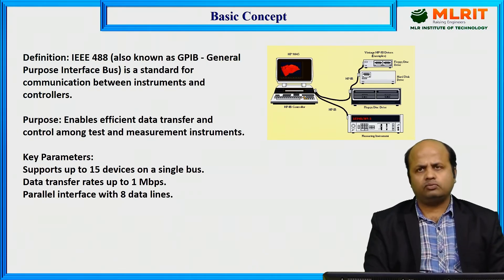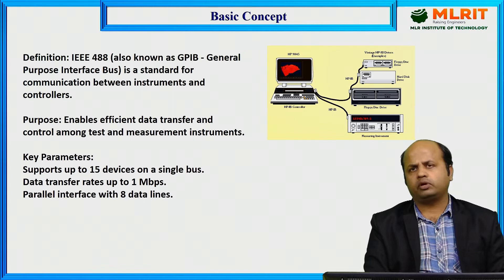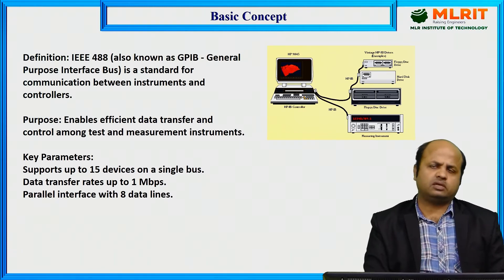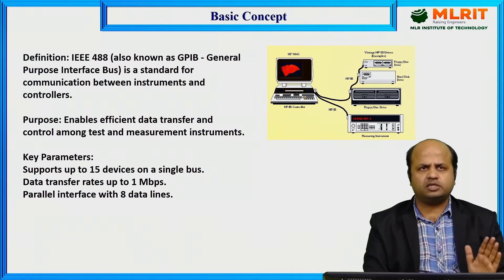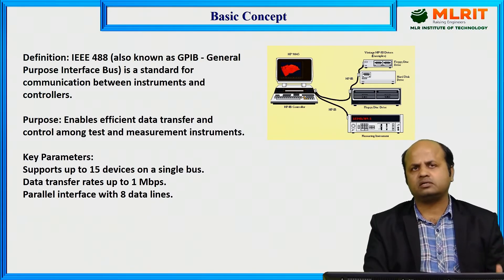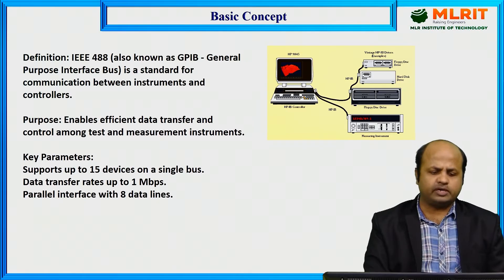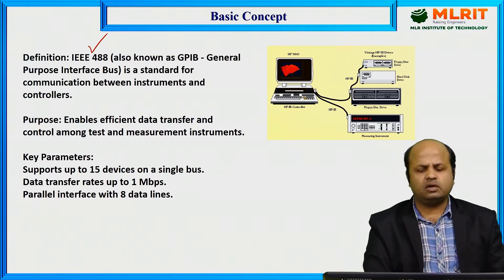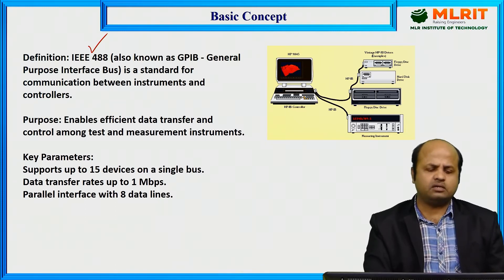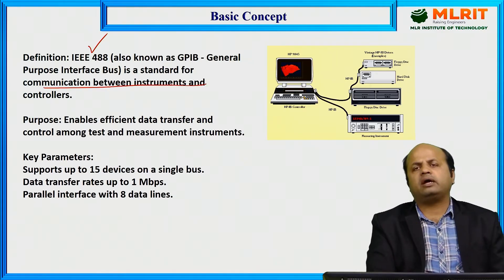First of all, we would like to know what is IEEE 488 bus. IEEE is the international organization — its full form is Institute of Electrical and Electronic Engineers — which sets some rules and regulations for data transfer. IEEE 488 is also known as GPIB, General Purpose Interface Bus, which is the standard for communication between instruments and controllers.